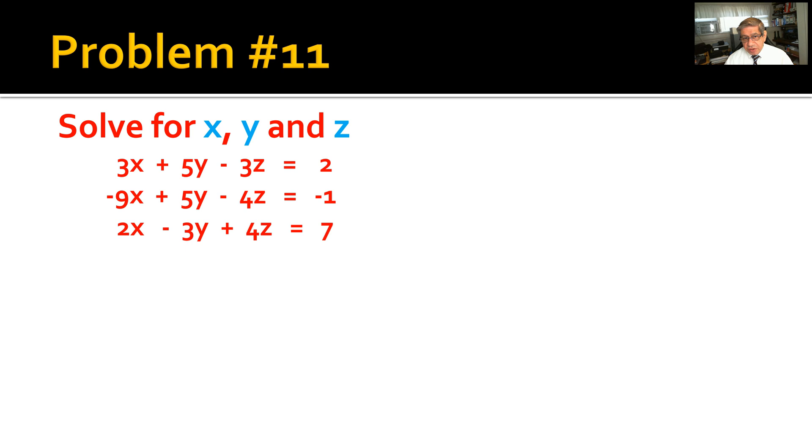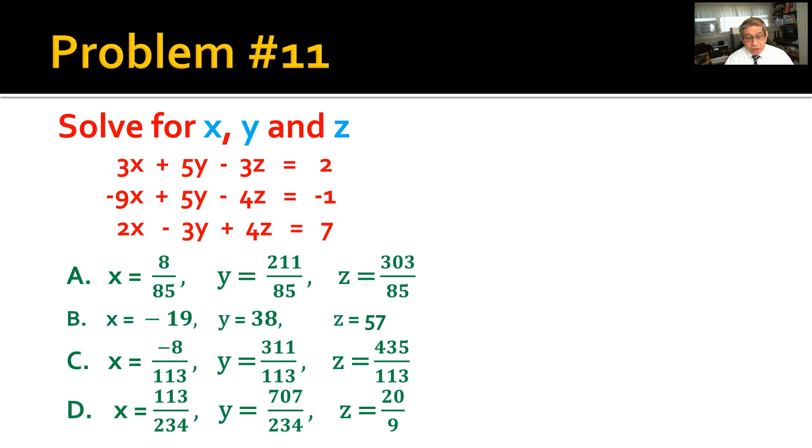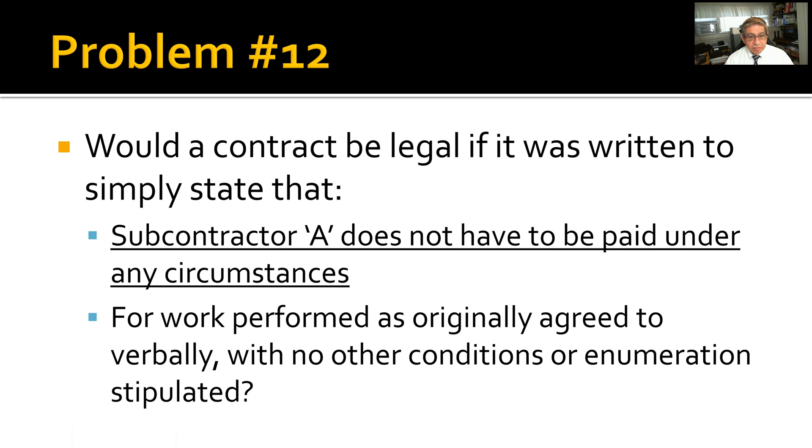Problem number 11: Solve for x, y, and z using these three simultaneous equations. These are the possible answers. Problem number 12: Would a contract be legal if it was written to simply state that subcontractor A does not have to be paid under any circumstances with no other conditions or enumeration stipulated?